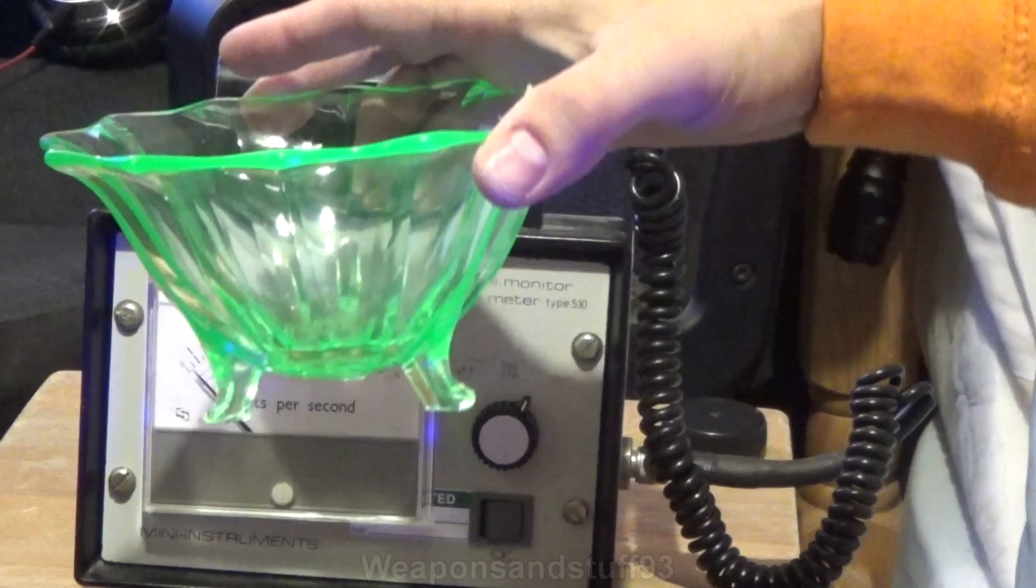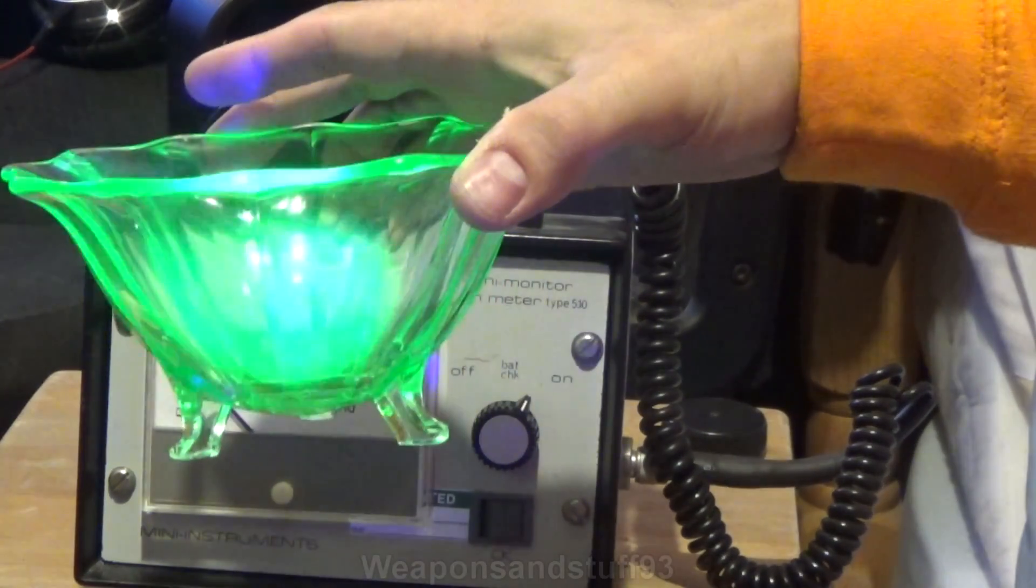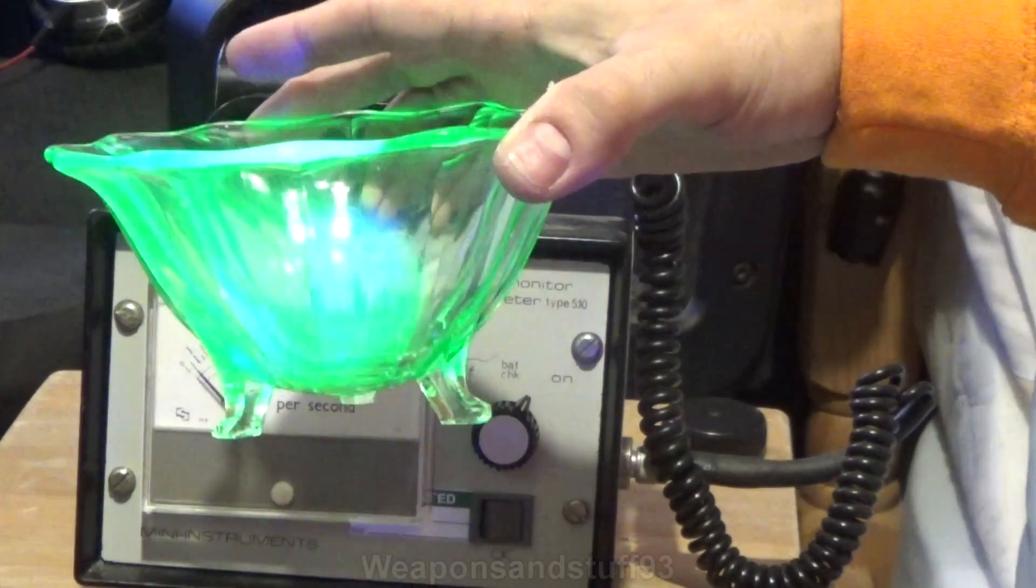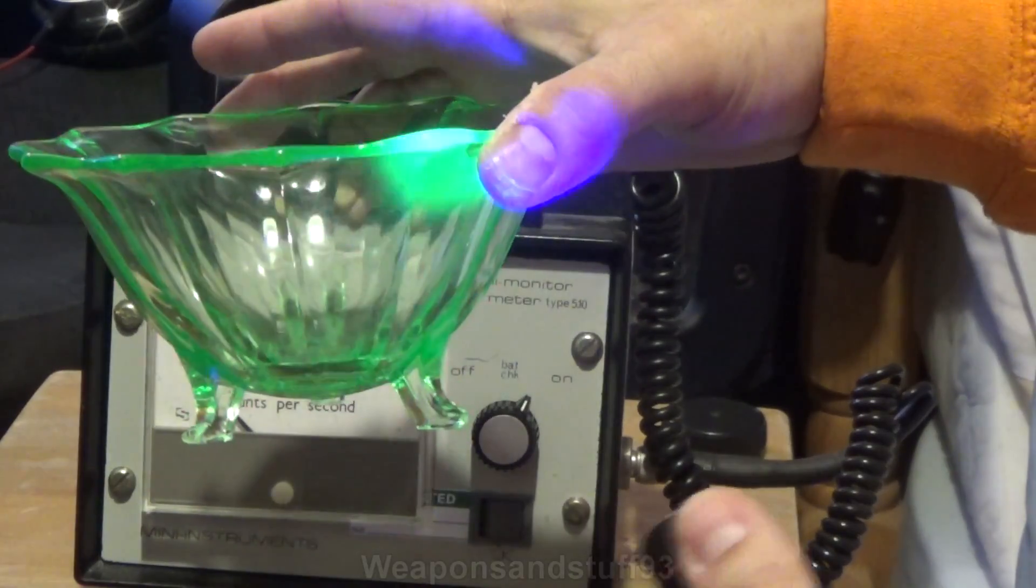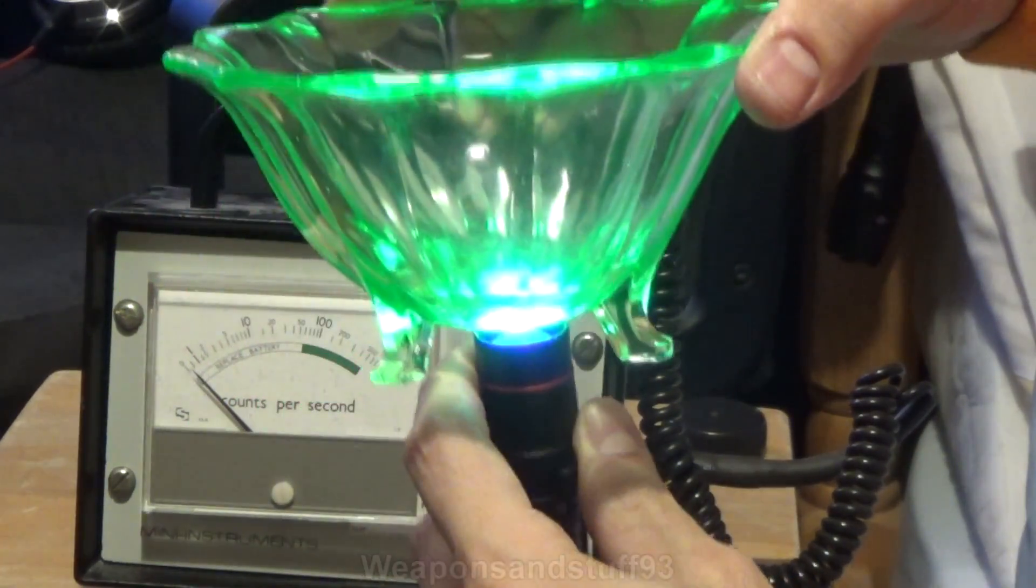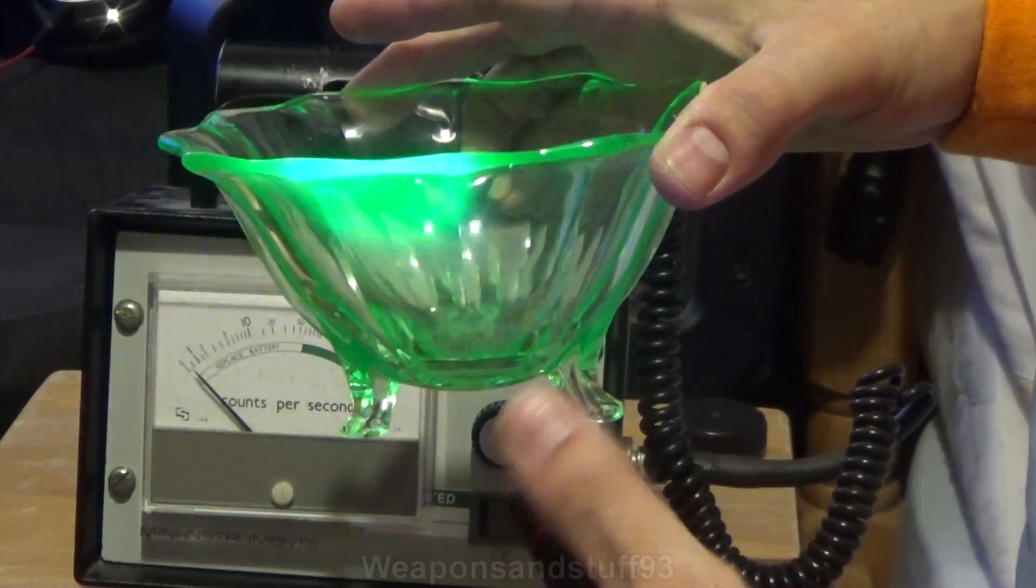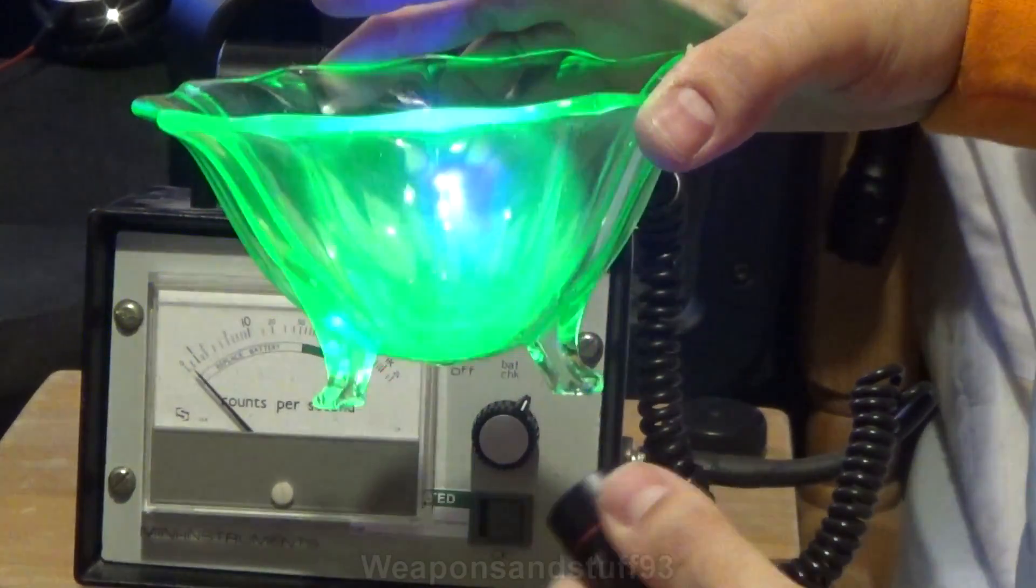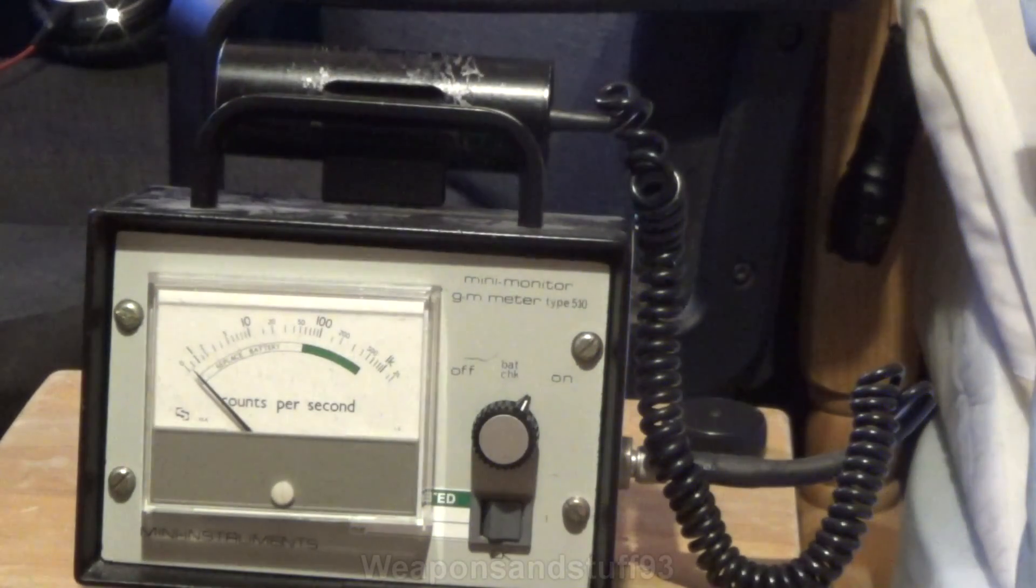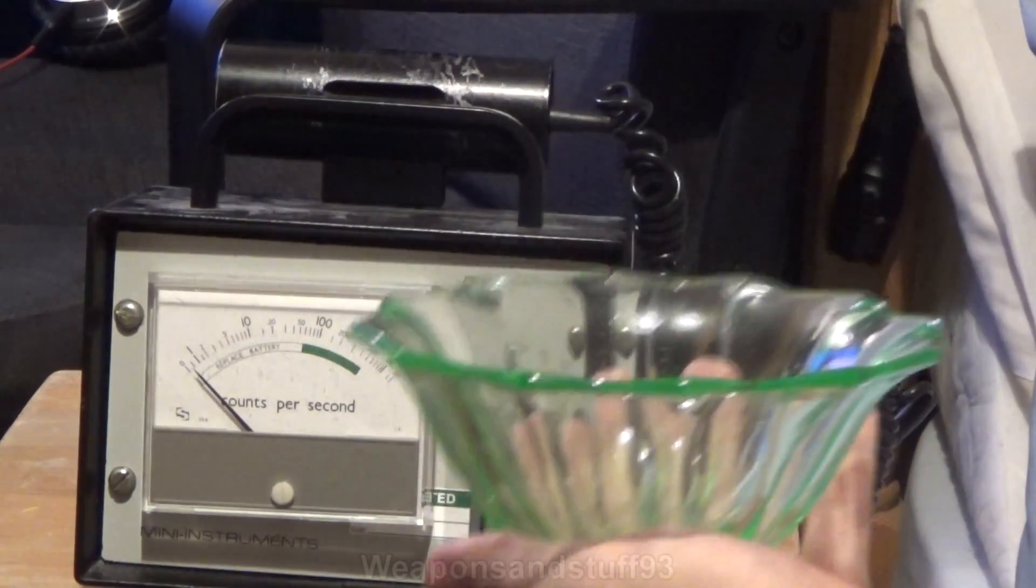There's a uranium glaze bowl, and as you can see that has a very nice green glow under this. How well that will show up on camera I don't know, but uranium glazed stuff or uranium glass glows very nicely under a light like that.